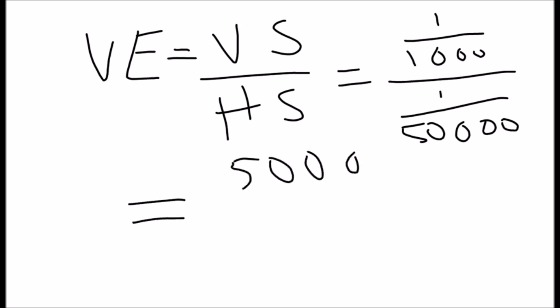So what you should have done is the following: inverted the fraction, 50,000 over 1,000, canceled out the zeros, giving you 50.